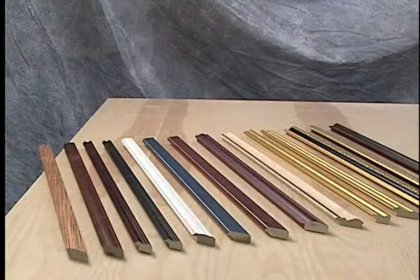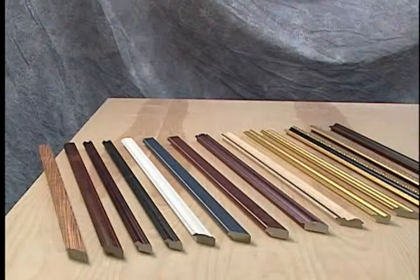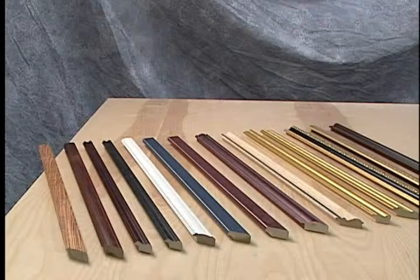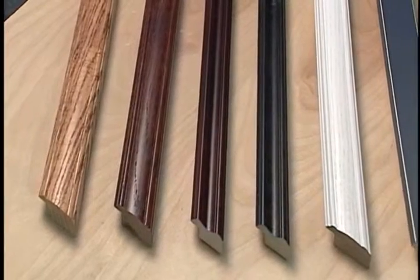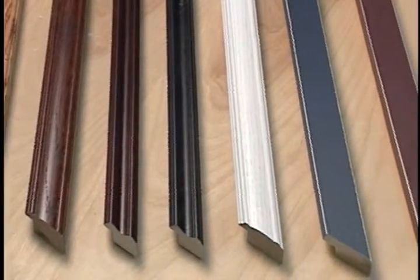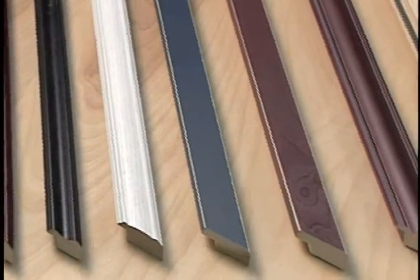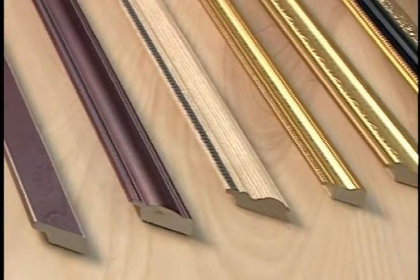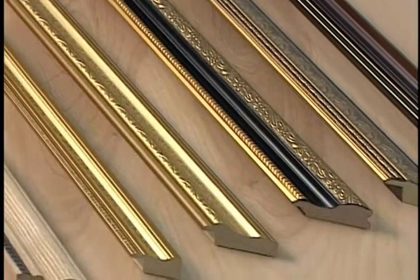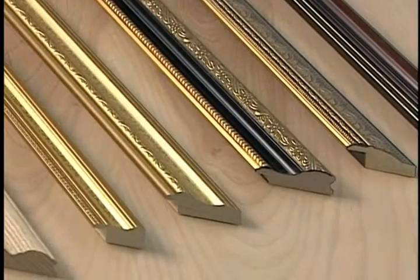There are many types of moldings available to use. Remember that the Logan do-it-yourself framing tool system accepts up to 2 1⁄2 inch molding, so you have plenty of variety and styles to choose from. Common molding styles include natural wood finish colors, black, white, various colors, and even unfinished versions that you can stain yourself. Another popular style of molding is gilded with gold or silver foil for that antique look.